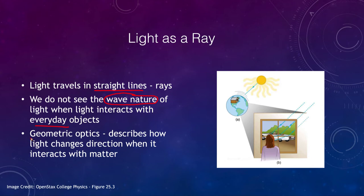What we're going to be looking at over the next couple of lessons is called geometric optics — the optics of geometry. We can use the fact that light travels in straight lines to understand how it changes direction when it interacts with matter. So when it strikes a mirror or goes through a lens, the direction will change, and that's what we want to start understanding in this lecture.